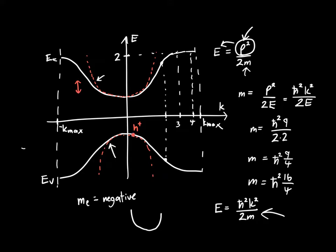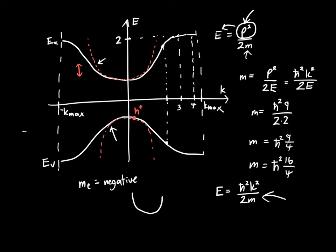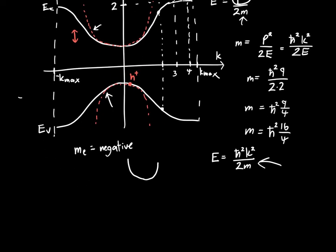We can determine the effective mass of both these particles by the curvature of those parabolas. If we want to find an expression for the mass involving the curvature of this parabola, we're trying to fit parabolas to the EK diagram. It'll turn out to be easier if we take the derivative.